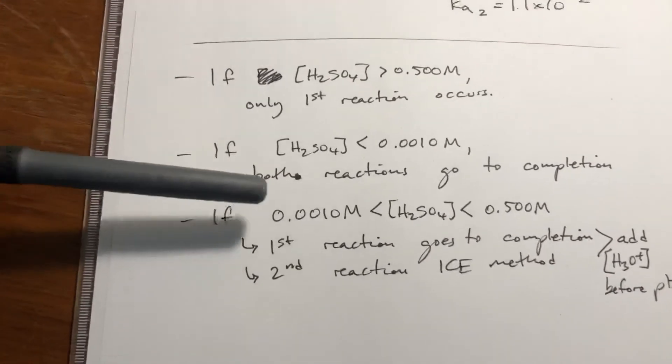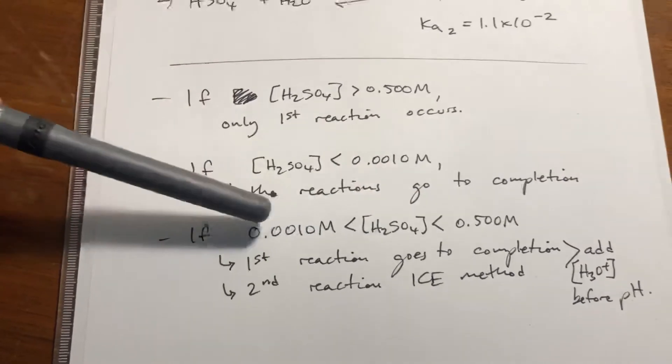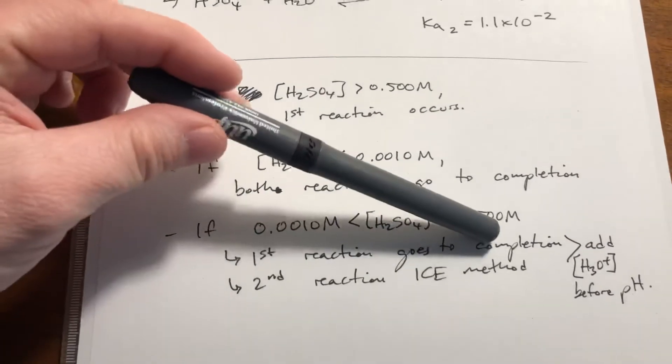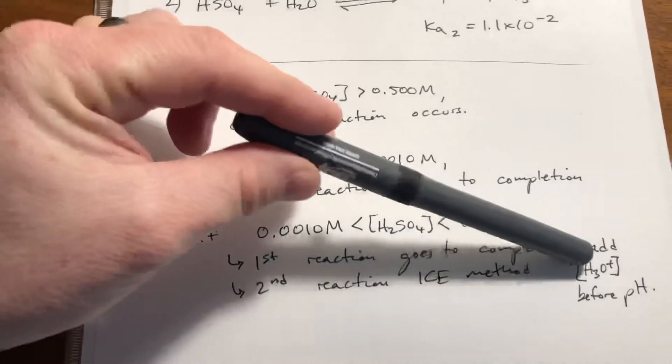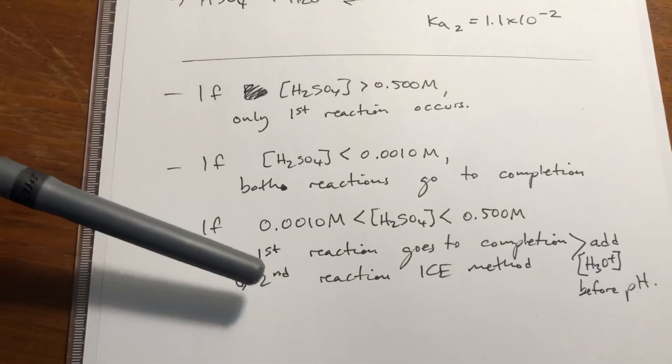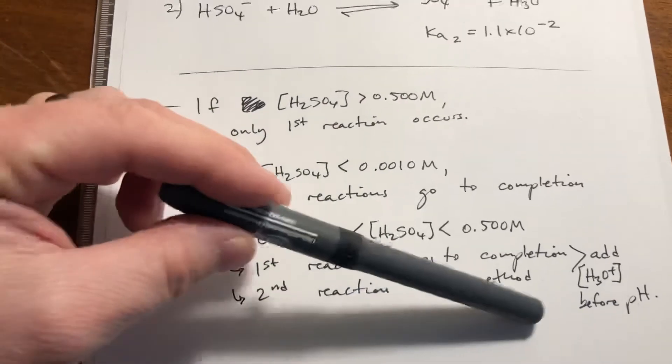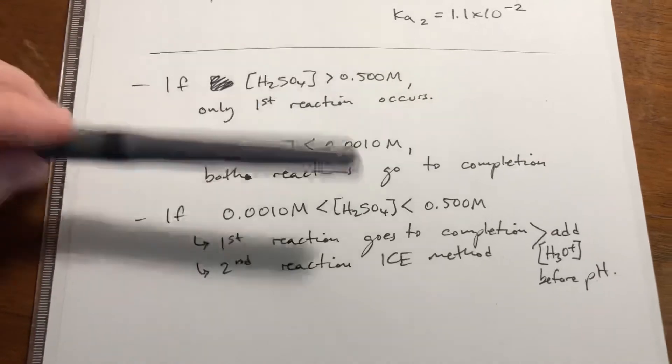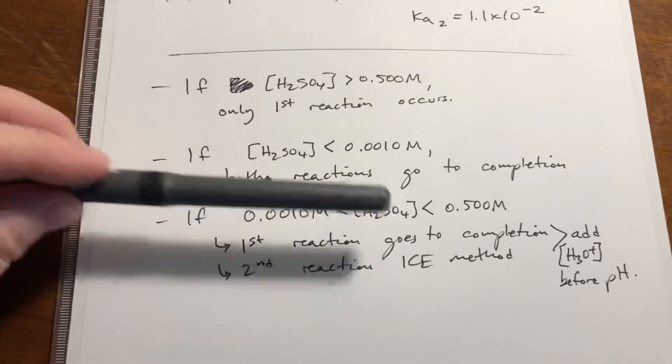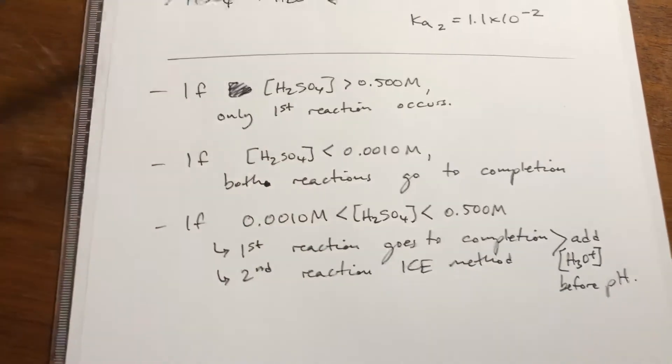If you're between those two ranges, between 0.001 molar and 0.5 molar, what happens is the first reaction goes to completion. So whatever the concentration is, you get that much H3O+. Then the second reaction, you start with that same concentration value and have to do the ICE method and see how much H3O+ you get. Since you're getting H3O+ from two reactions, you're going to have to add them up and then take the negative log of it before you can do the pH.